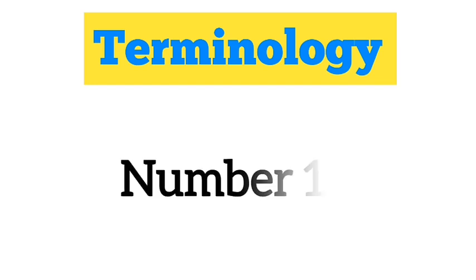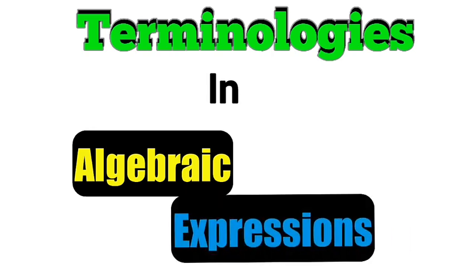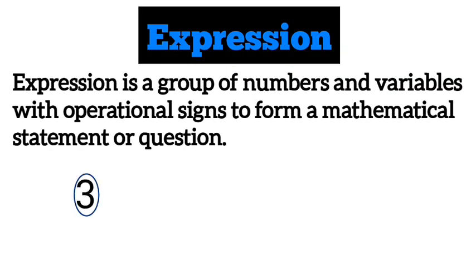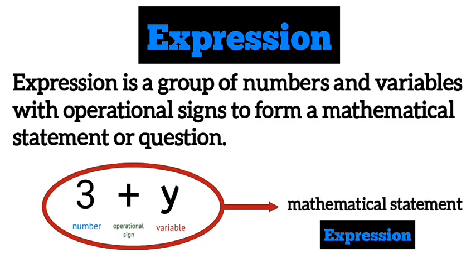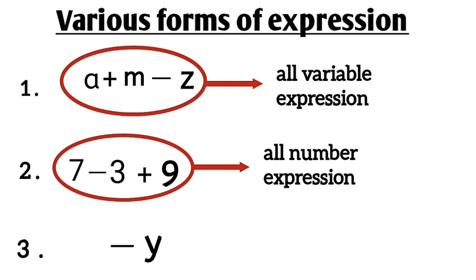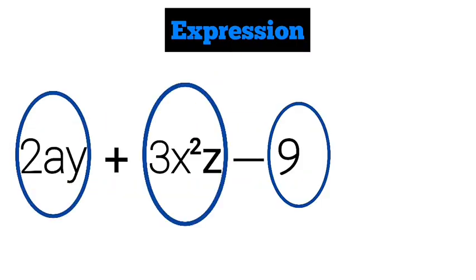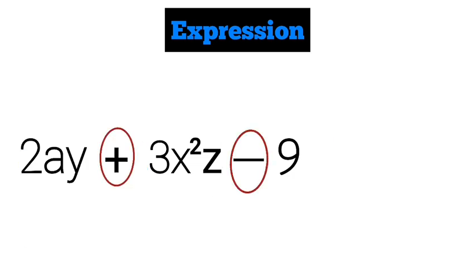Now let's get started with term number one. The first terminology is expression. It would be difficult to talk about terminologies in algebraic expression without looking at the word expression. An expression is a group of numbers and variables with operational signs to form a mathematical statement. This means that an expression has components such as a variable, a number, or both, combined with one or more operational signs. An expression can be terms or a collection of terms separated by addition or subtraction signs.